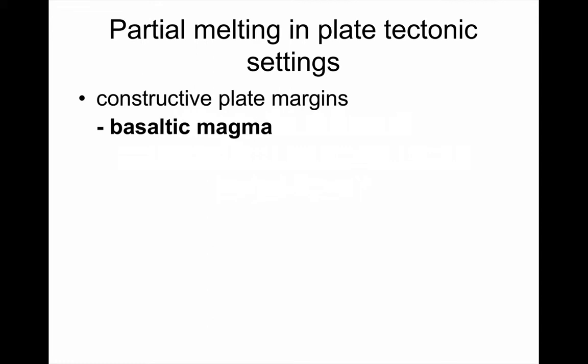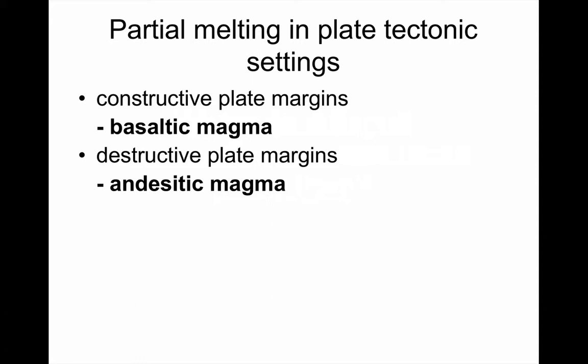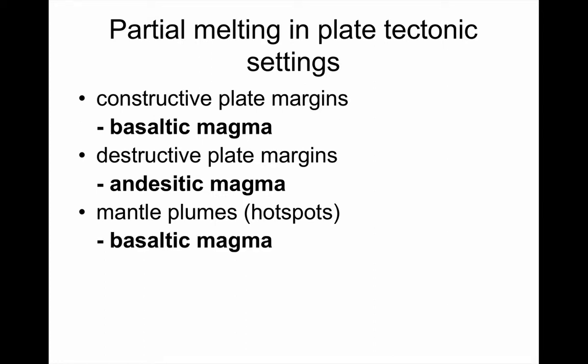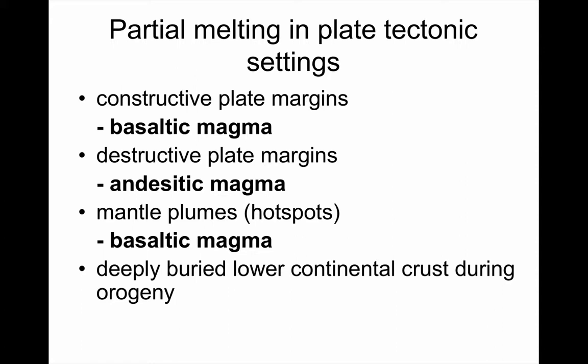Now, one of the other aspects we need to look at is plate tectonics and how plate tectonics has an influence on melting. We've seen this already at AS, but as a reminder, we know at constructive plate margins we see basaltic magma. At destructive plate margins we get the formation of andesitic magma. Mantle plumes, particularly sub-oceanic ones, produce basalt. And if we bury some continental crust deep within the crust during an orogeny, we end up with granites.